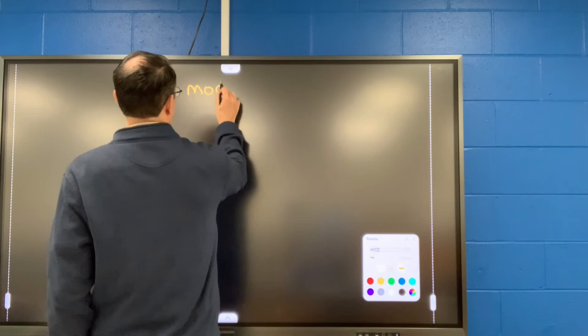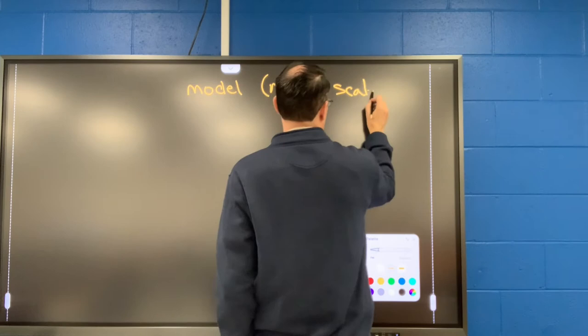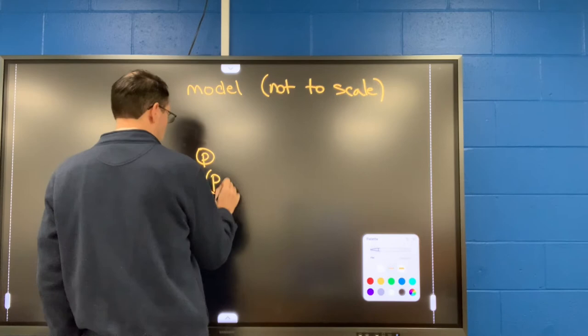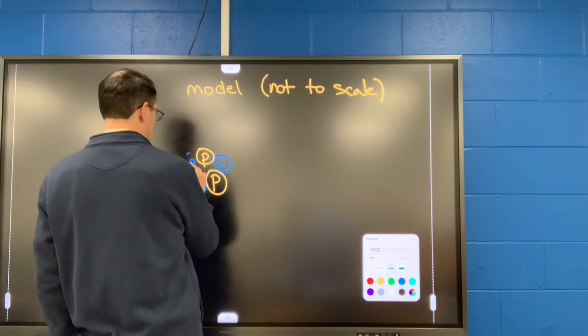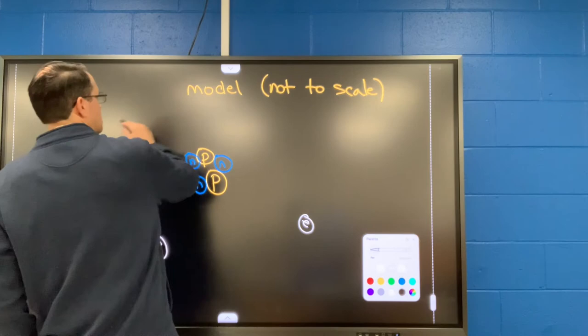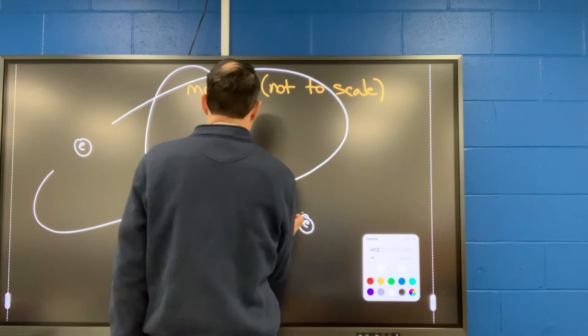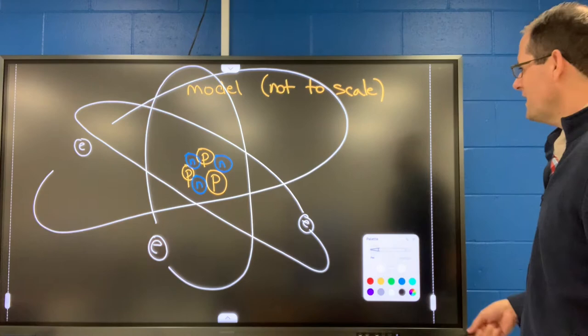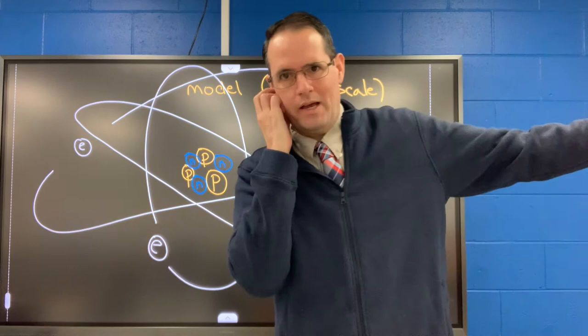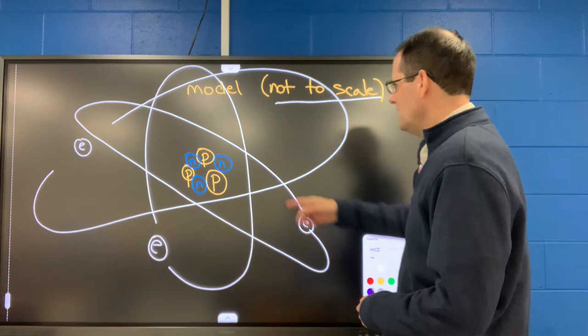Here's the model of the atom — not to scale. In your nucleus you're going to have protons and neutrons, and then outside of that you're going to have electrons. In the middle of the atom is called the nucleus. It's not to scale because if I drew the nucleus the size of a soccer ball, the electrons would be miles away.